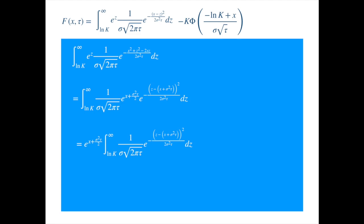Now the integrand is nothing but the density of a normal with mean equal to x plus sigma squared times tau, and variance equal to sigma squared times tau. From earlier on in this video, we know how to write this in terms of the standard normal distribution, so we get...